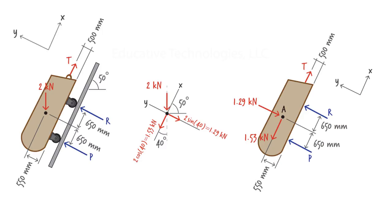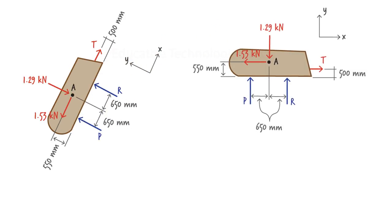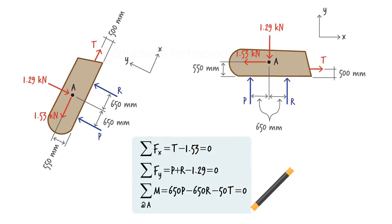We are now ready to write the equilibrium equations. Before doing so, you may want to rotate the entire free body diagram 50 degrees clockwise in order to align the x-axis with the horizontal axis, if that makes it easier to write the equilibrium equations. Either free body diagram gives us these static equilibrium equations, which we can easily solve for the tension force in the cable and the reaction forces at the base of the wheels.